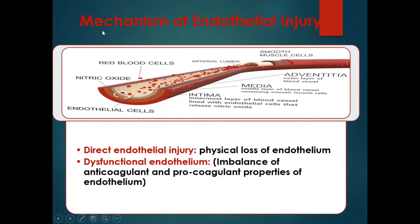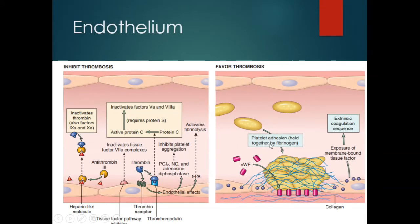There are two mechanisms for endothelial injury. The first is direct endothelial injury, caused by physical loss of endothelium such as during surgery or trauma. The second is dysfunctional endothelium, which causes an imbalance of anticoagulant and procoagulant properties of the endothelium, resulting in an imbalance between antithrombotic and prothrombotic effects — with downregulation of antithrombotic molecules and upregulation of prothrombotic ones.